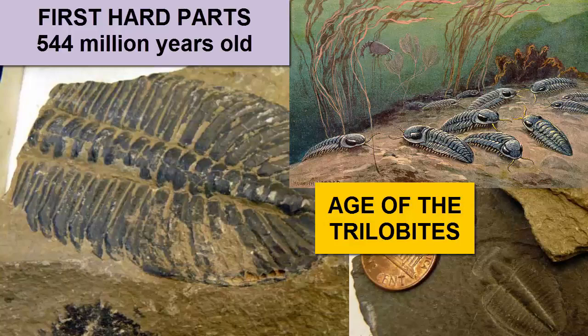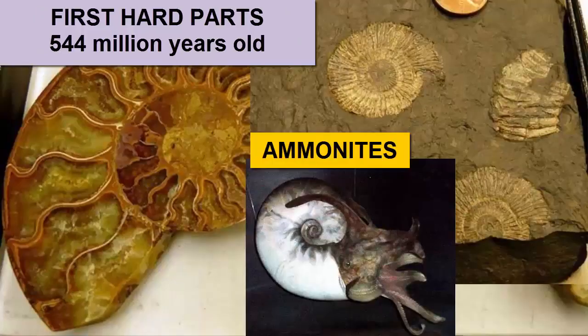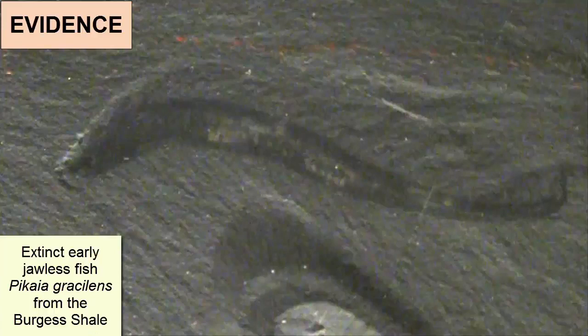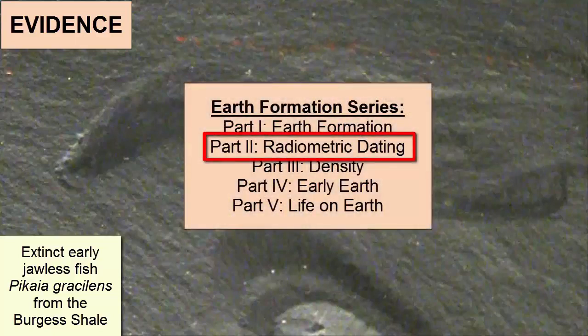Ammonites came next, a nautilus-like cephalopod — imagine a giant octopus-like organism living in an ornate hard shell and floating at various depths within the water column. The first vertebrates, jawless fish with cartilaginous skeletons, evolved about 520 million years ago. The evidence for this timeline comes from fossils we find in rocks that we date through radiometric dating. Watch the video tutorial on radiometric dating for more information on that process.